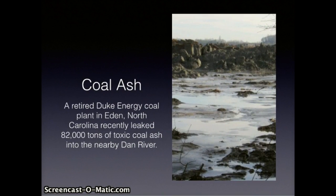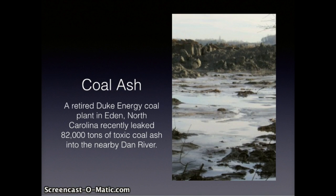Another problem related to coal is ash disposal. When coal is burned it produces ash — in the United States, approximately 140 million tons of waste annually. Coal ash contains highly toxic chemicals including lead, mercury, arsenic, selenium, and chromium. Most of this material is stored in aging ponds that are largely unregulated. In 2013, a retired Duke Energy coal plant in Eden, North Carolina leaked 82,000 tons of toxic coal ash into the nearby Dan River, sending 27 million gallons of contaminated water from a 27-acre storage pond into the river through a broken pipe.